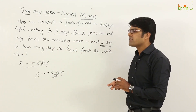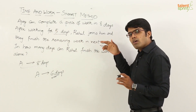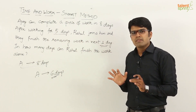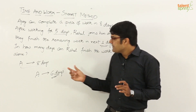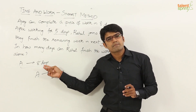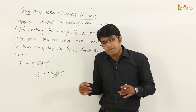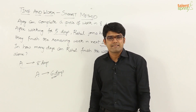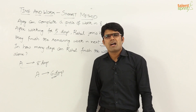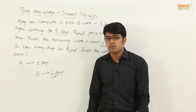In this whole process, Ajay has worked for six days — five days alone, and on the sixth day along with Rahul. Now, you know that Ajay can do the total work in eight days, but he has worked only for six days. So how much can he finish in six days? He can finish three-fourths of the work — six out of eight days means three-fourths of the work gets done.